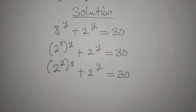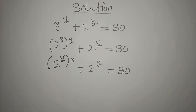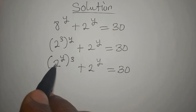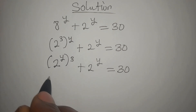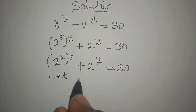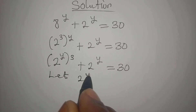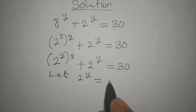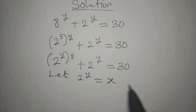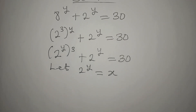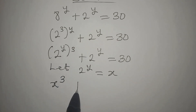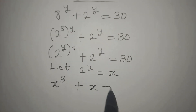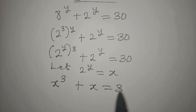From here, what can we observe? We can see that we're having 2 to the power of y in two places. So, let 2 to the power of y be equal to x. In that case, we are going to have x to the power of 3 plus x equal to 30.